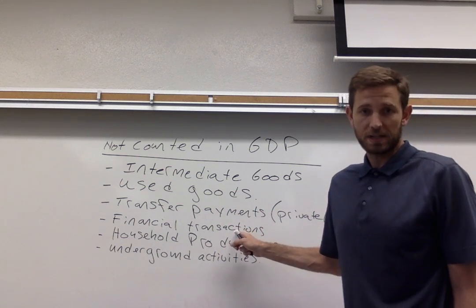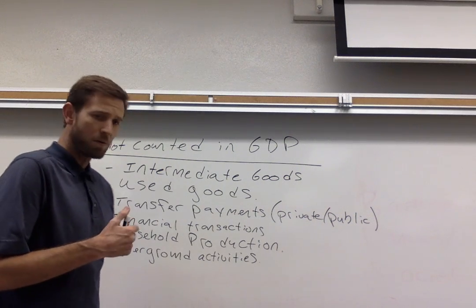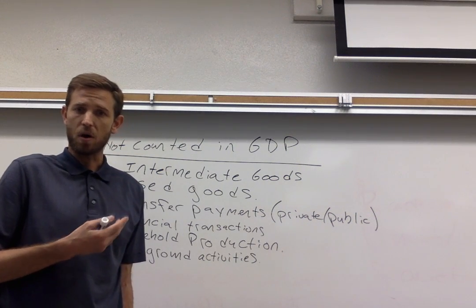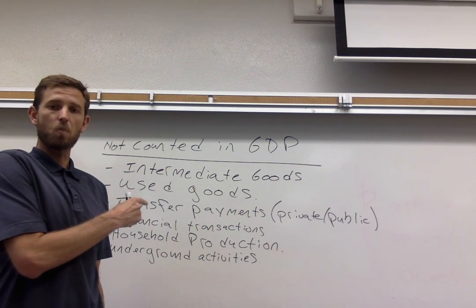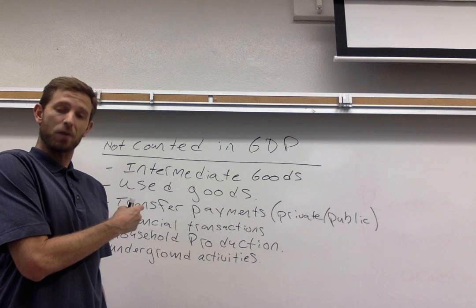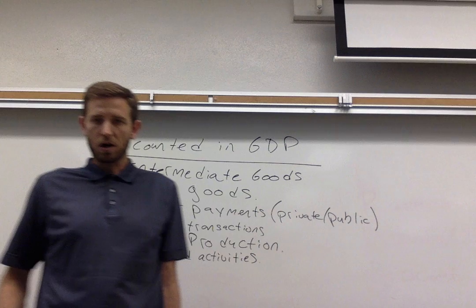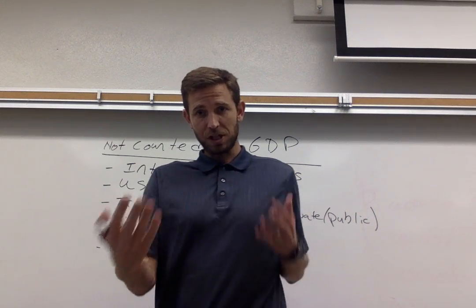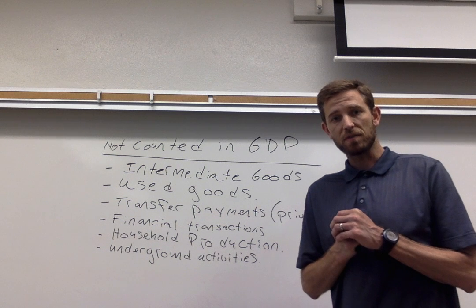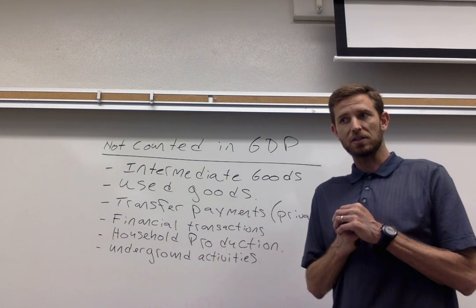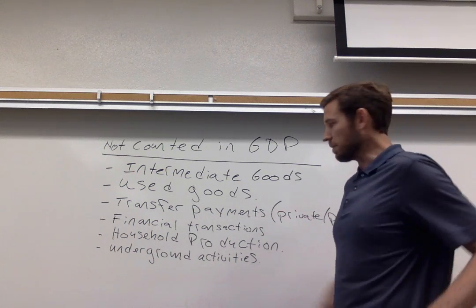Financial transactions aren't counted in GDP. These financial transactions are when people are buying stock or buying bonds and things of this nature. The reason why you don't want to count this is because there's no new production. When someone buys a share of stock, it's just the case that you're switching ownership from one person to another. When someone buys a bond from someone else, that's essentially someone borrowing money from somebody else. No new production — it doesn't belong in GDP.